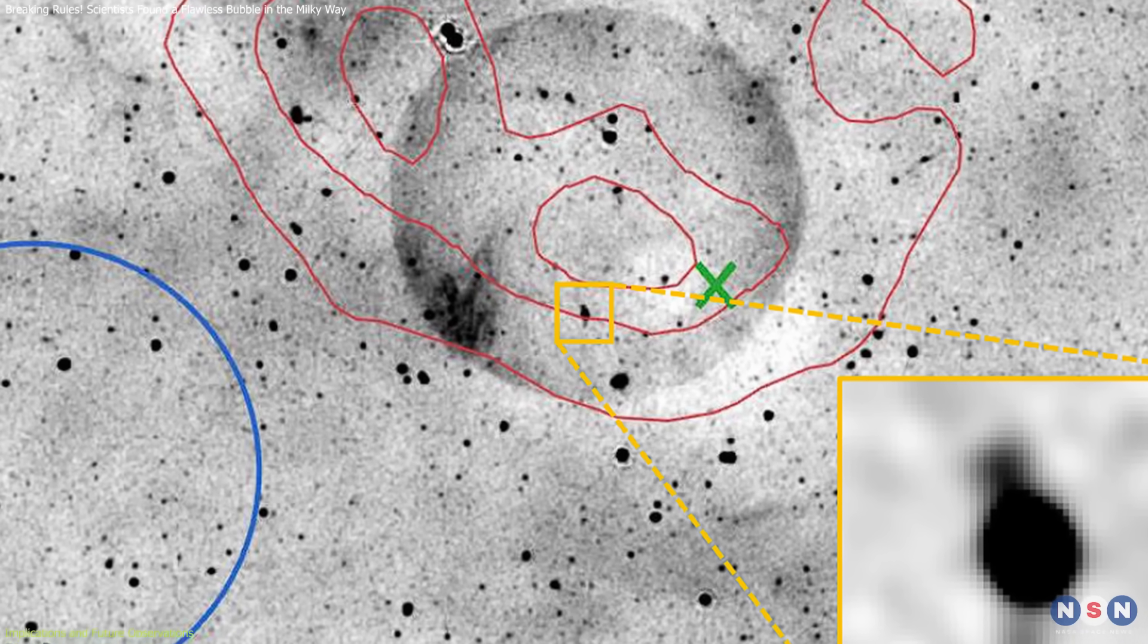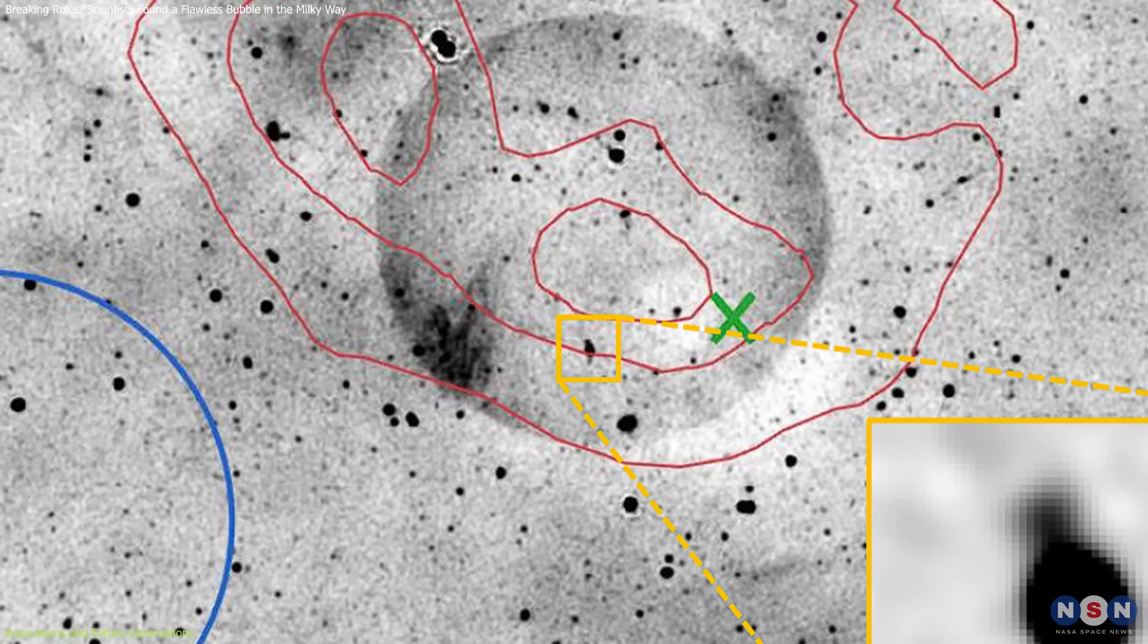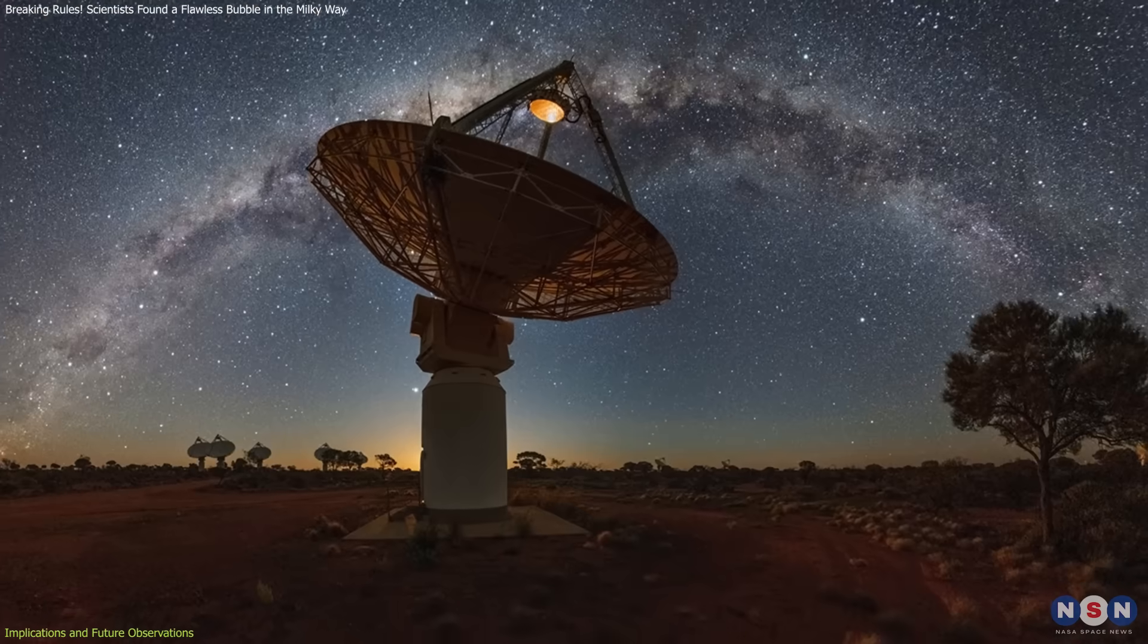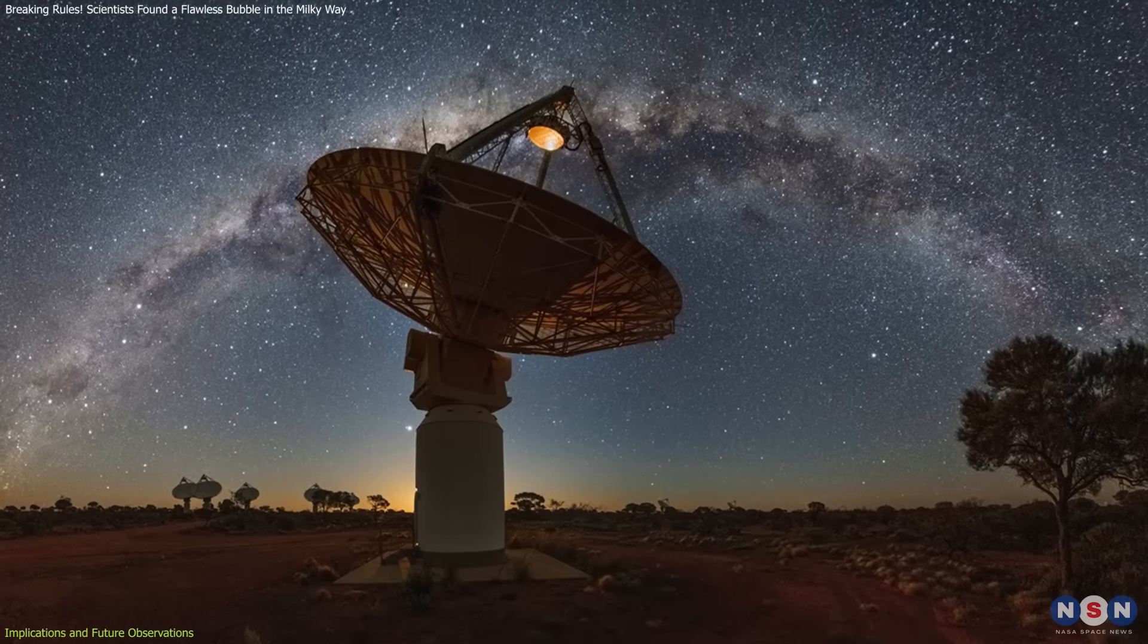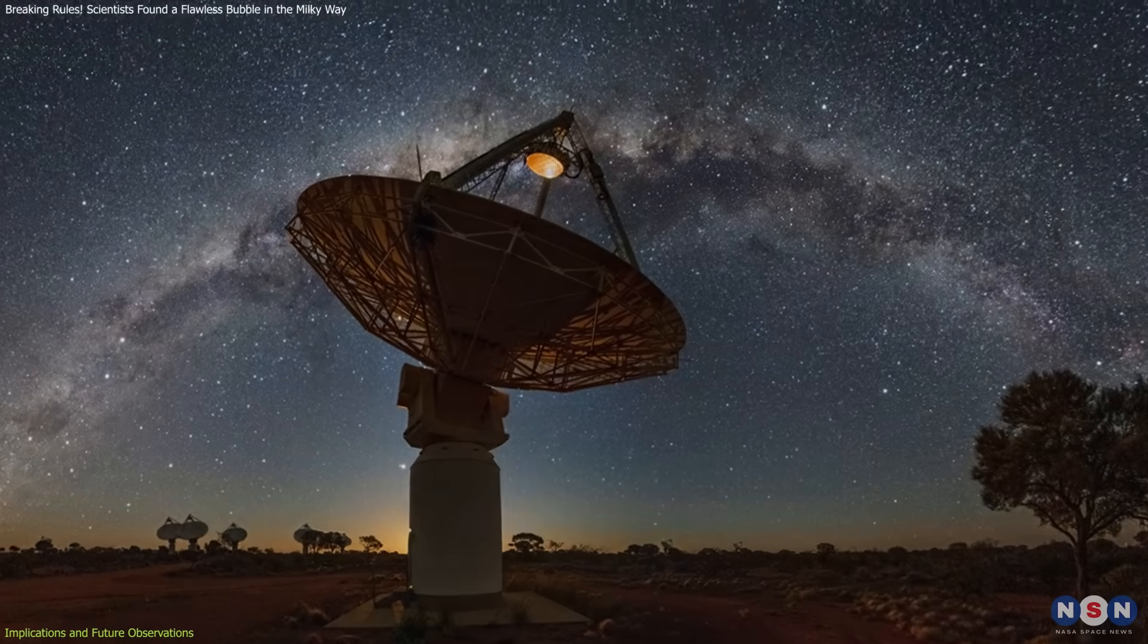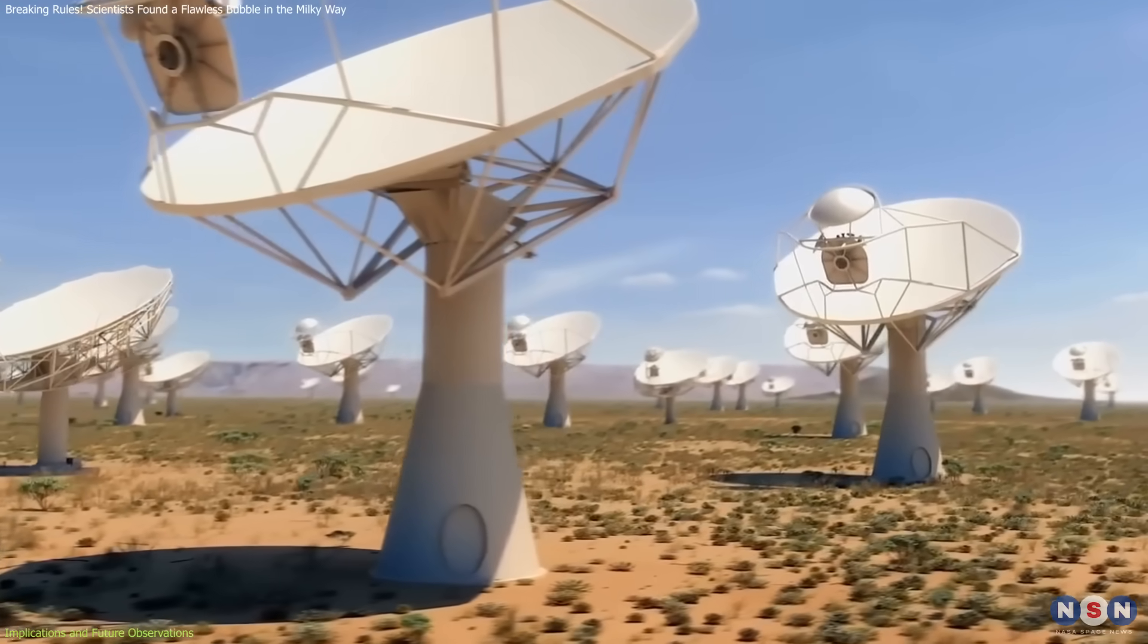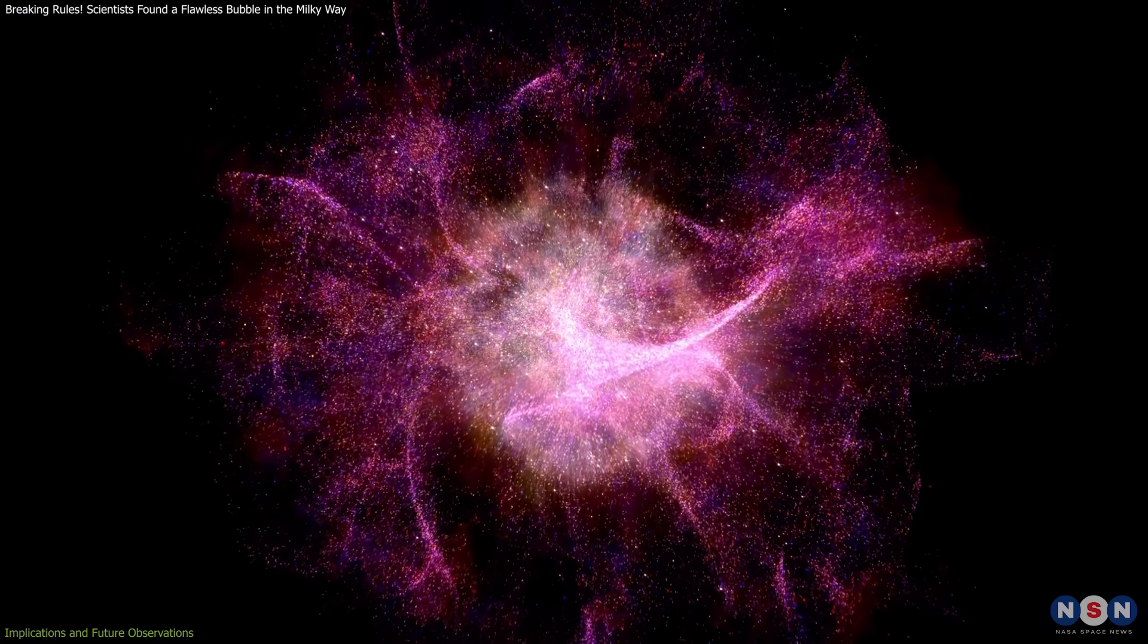Uncovering Teleos' secrets will require deeper X-ray, optical, and focused radio studies, efforts already in progress. Its discovery shows the power of wide-field radio telescopes like ASKAP, and with the upcoming SKA, we may find that it isn't alone, but the first of many hidden, symmetric remnants.